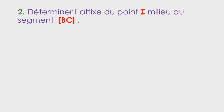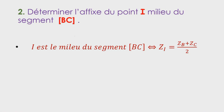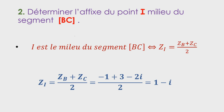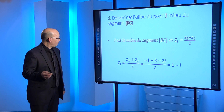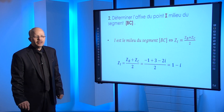Question 2 : déterminer l'affixe du point I, milieu du segment BC. Si I est le milieu du segment BC, alors l'affixe de I est la somme des deux affixes divisée par 2 : ZI = (ZB + ZC)/2 = (-1 + 3-2i)/2 = 1-i. Donc l'abscisse de I est 1 et l'ordonnée de I est -1.